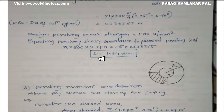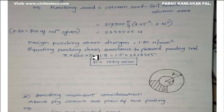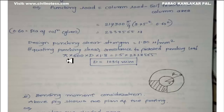I equate the punching shear resistance to the factored punching load: pi into 600 into d into punching shear strength equals 1.5 times the punching load. The punching shear resistance is given by pi into diameter of the column into depth of footing into 1.8, which is the design shear strength. Solving, I get d as 1034 mm — that is the depth of the circular footing from punching shear.